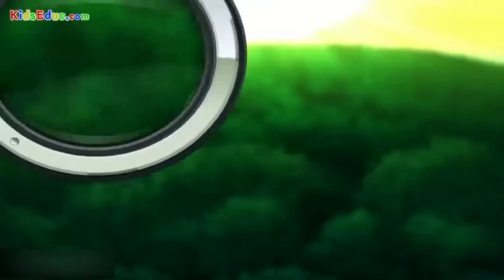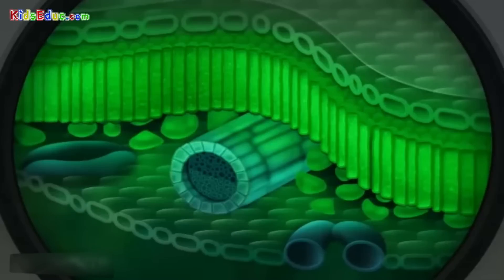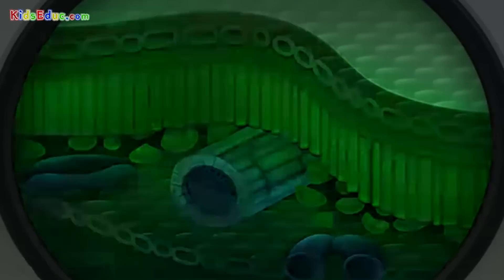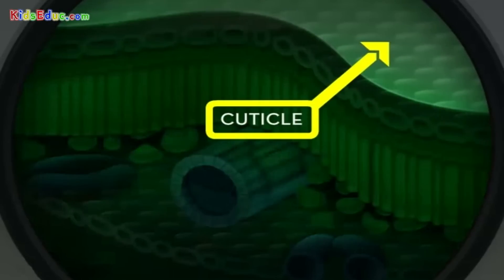Considering the job that leaves do, their anatomy is pretty simple. That transparent waxy surface you feel when you touch a leaf is called the cuticle, and it's there to prevent water loss. The cuticle gets thicker in drier climates where it has to work harder.